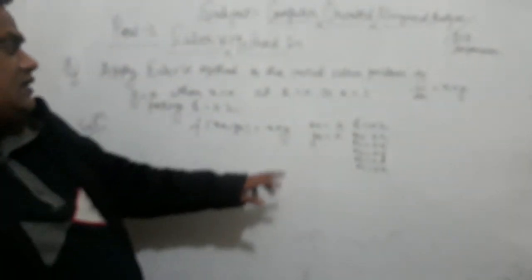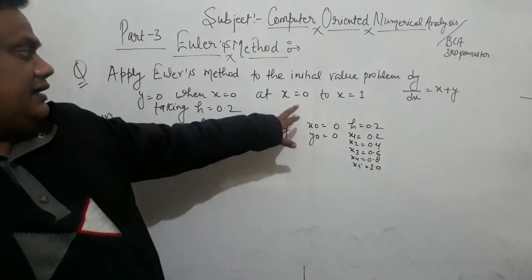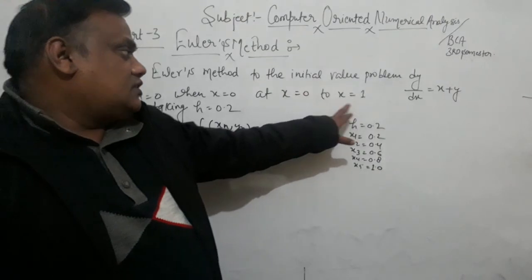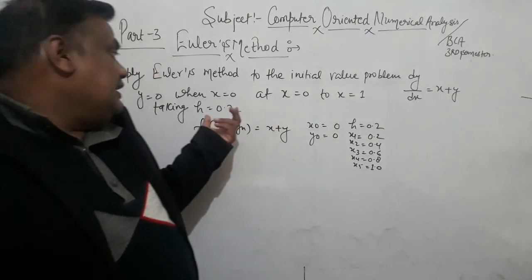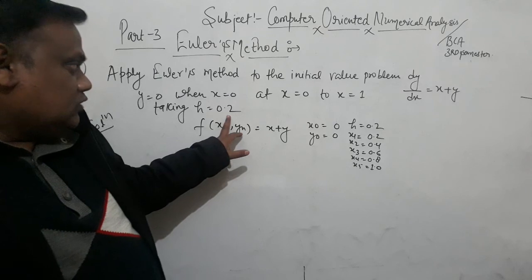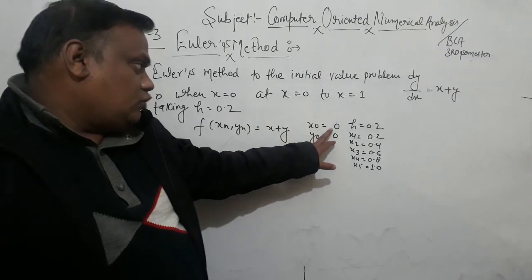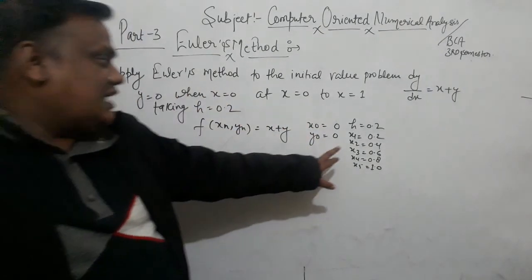The x values are: x1 = 0.2, x2 = 0.4, x3 = 0.6, x4 = 0.8, x5 = 1.0. This covers the interval from x equal to 0 to x equal to 1. The step size h is given from the initial condition x0.